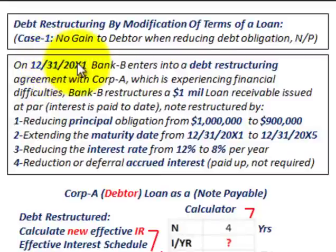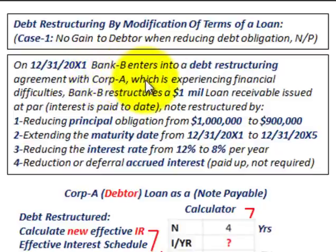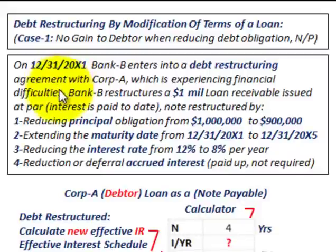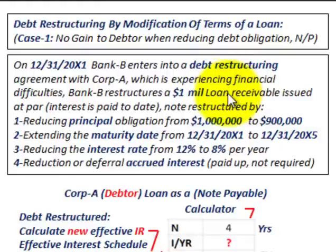On 12/31/20X1, Bank B enters into a debt restructuring agreement with Corporation A. Corporation A is experiencing financial difficulties and they're in a position where they can't pay off their debt — a notes payable or loan to Bank B. So Bank B restructures a million dollar loan receivable, or notes receivable, from Corporation A.